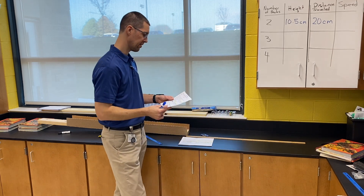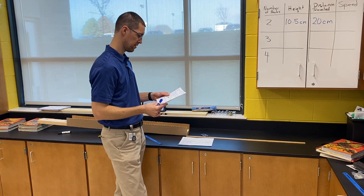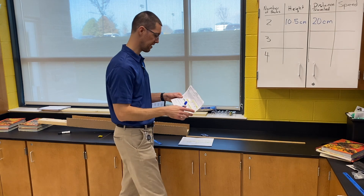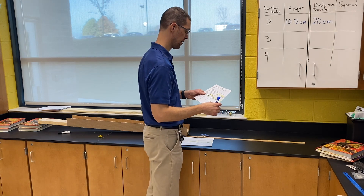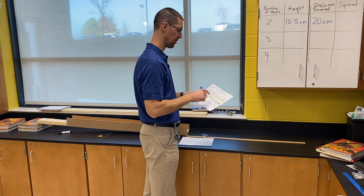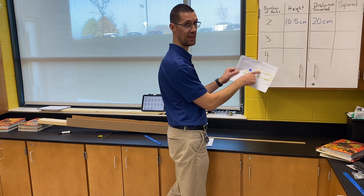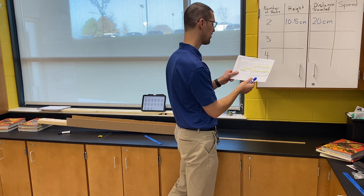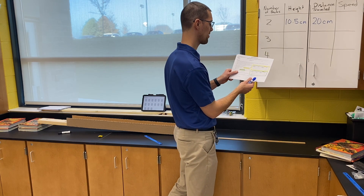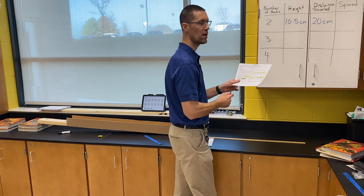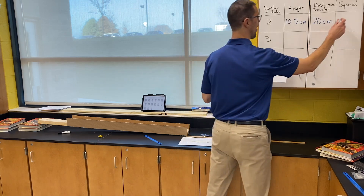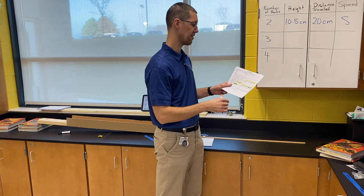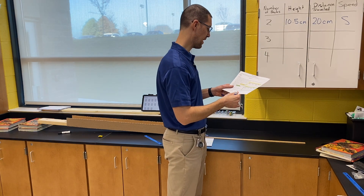Measure and record the distance the car travels along the floor from the lower edge of the board in the unweighted vehicle table — that's the yellow table up here. Also record the speed of the car as slow, medium, or fast. That one I would say probably went slow, so you can just circle slow since it should have S, M, and F.